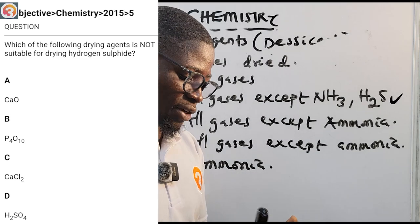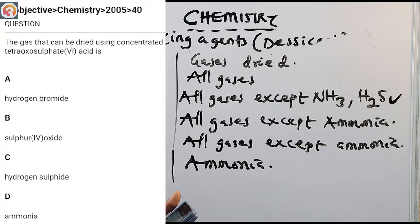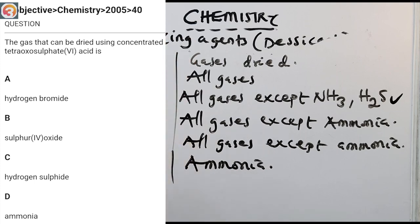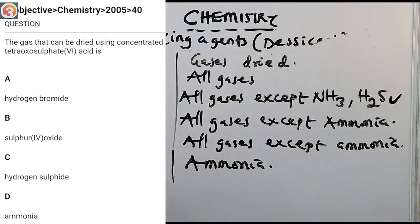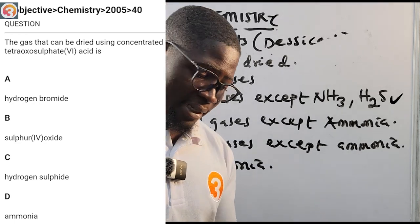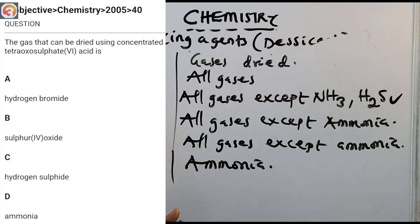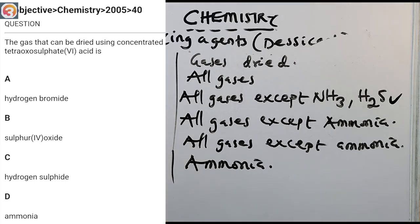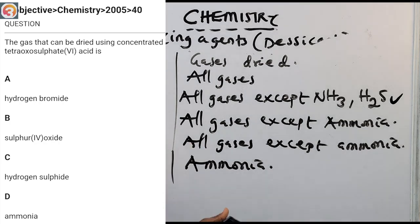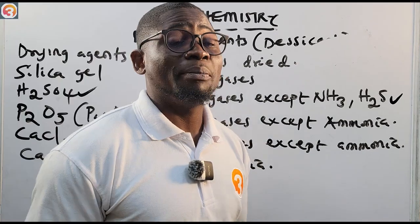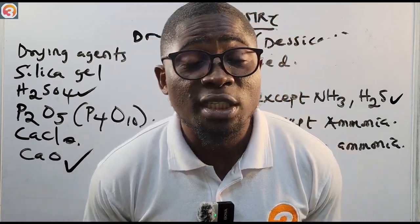Drying agents are very important — you need to know them all. Now, 2005 question number 40: the gas that can be dried using concentrated tetraoxosulfuric acid is — A) hydrogen bromide, B) sulfur dioxide, C) hydrogen sulfide, D) ammonia. H2SO4 does not dry hydrogen sulfide, ammonia, or hydrogen bromide. So the correct answer is B — sulfur dioxide.